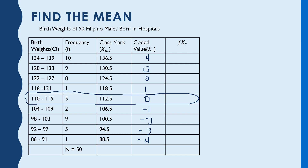So: 10 times 4 is 40; 27; 16; 1; then negative 2; negative 18; negative 15; and negative 4. Adding the positives: 40 plus 27 plus 16 plus 1 equals 84. Adding the negatives: 20 plus 15 is 35, plus 4 is negative 39. So 84 minus 39 equals 45.